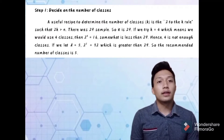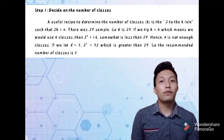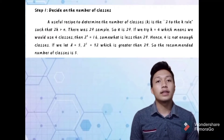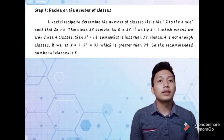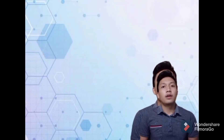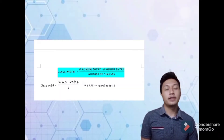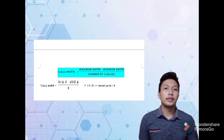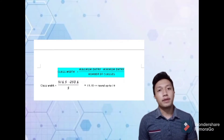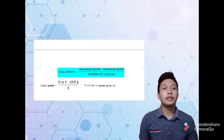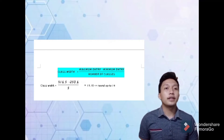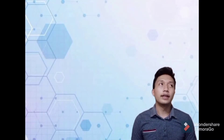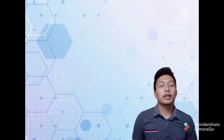If we let K equal 5, then 2 to the power of 5 equals 32, which is greater than 29. So the recommended number of classes is 5. The second step is to determine the class interval or width. Refer to the board behind me — we use the formula to calculate the class width. After inserting the value, the answer should be rounded up. The next step is to set the individual class limit.